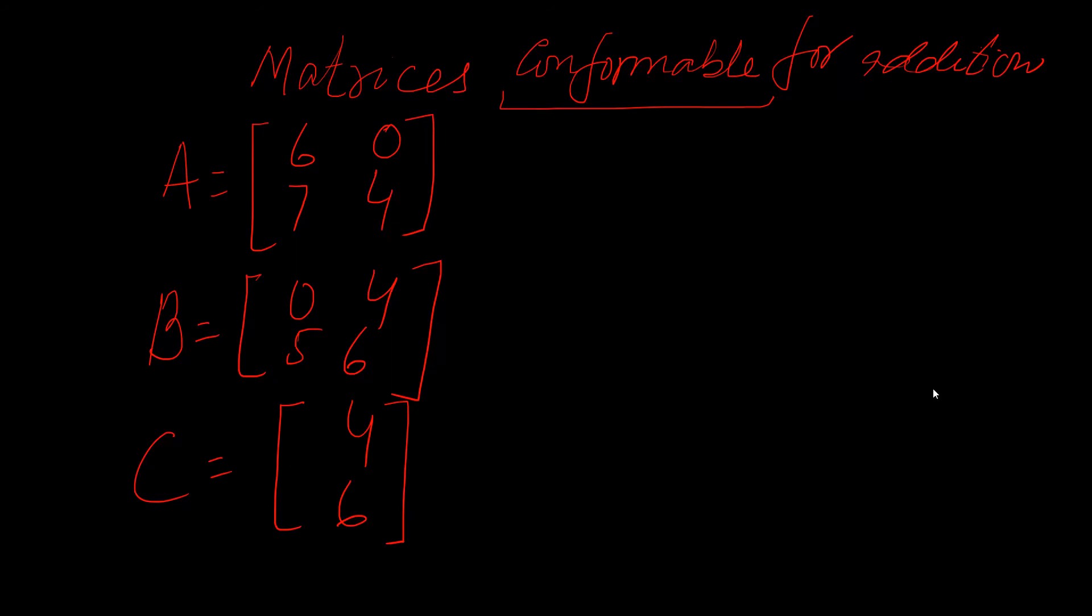First of all you have to see the order of the matrices or dimensions of the matrices. So what is the meaning of order and dimension? Order or dimension means number of rows and number of columns. So first of all always you have to see number of rows. Horizontally these are called rows. So in this matrix A we have two rows and we have two columns.